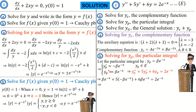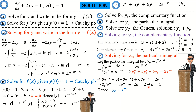Replacing y double prime with beta e to the negative x, y prime with negative beta e to the negative x, and y with beta e to the negative x, and equating to 2e to the negative x, we get: beta e to the negative x minus 5 beta e to the negative x plus 6 beta e to the negative x equals 2e to the negative x, which simplifies to 2 beta e to the negative x equals 2e to the negative x. Equating coefficients gives 2 beta equals 2, so beta equals 1.